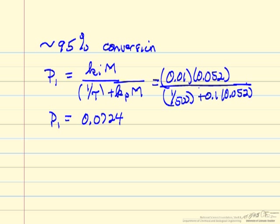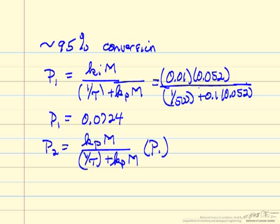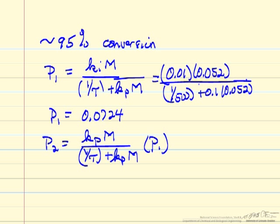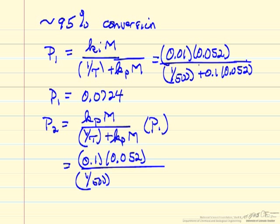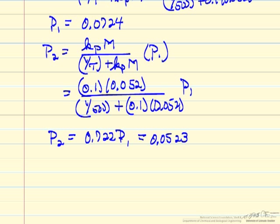The concentration of polymer two, from what we showed earlier, is related to the propagation rate constant and the same terms times the concentration of polymer one. So if we substitute the rate constant, the monomer concentration in the reactor, one over the spacetime, and again the rate constant, we get polymer two related to polymer one as shown by the equation, and we have the concentration in moles per liter. Polymer three is of course the same equation times polymer two, and so forth — very easy to generalize this into a spreadsheet.